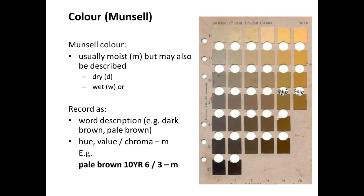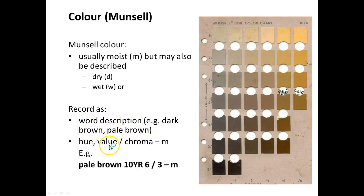We'll start with color. Color will be characterized in the field based on the same principle as when you go pick out paints at the paint store for your walls — the Munsell color system. We look at soils in the field when they're moist, because the soil color will look different when it's dry or when it's wet. You always have to note that it's moist when you're assessing the color. You're going to record words like dark brown or pale brown, and then give the hue, value, and chroma. Here's an example of how it's written.